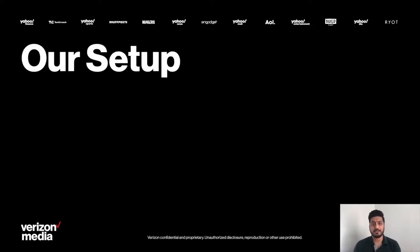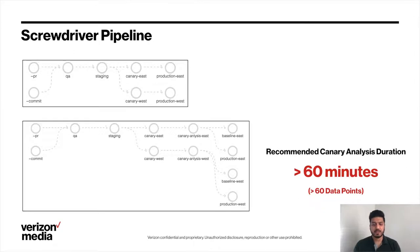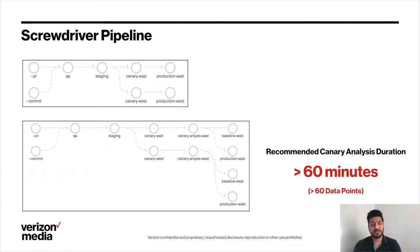Let's talk about how that is achieved at Verizon Media. A typical Screwdriver pipeline has a commit leading to a QA build and deployment, followed by staging deployment. Assuming functional and integration tests pass, we move on to canary and production deployments in the respective data centers. In the new setup, we introduce a Screwdriver job that performs canary analysis after the canary deployment. If canary analysis passes, the code is deployed to baseline and production. You need to make sure there is no shear where canary analysis passes in one data center and not the other. We recommend canary analysis be performed for at least 60 minutes to get enough data points, as statistical methods are more accurate with more data and false positives can occur with shorter durations.